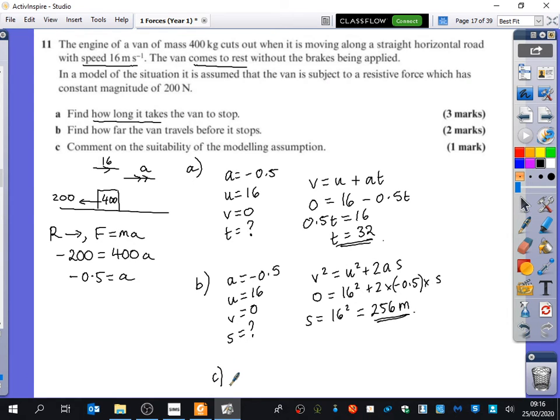So it says in a model—this is the bit to look at—the situation it is assumed that the van is subject to a resistive force which has a constant magnitude of 200. So the only thing that we've said in the model is that it has a resistive force which has constant magnitude. If they're asking you to criticize the model, basically just say the opposite of what the model has said. So what could we say about the model that's not a very good thing that they've done? It may not be constant. Resistance to motion is not likely to be constant.